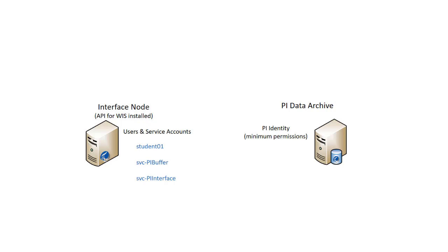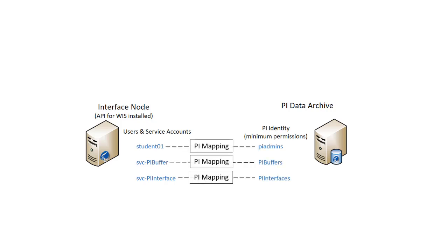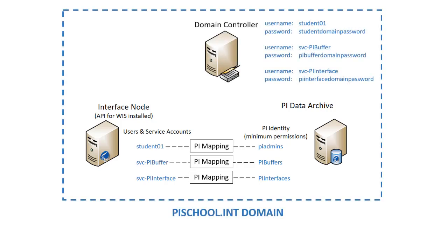You are likely familiar with using service accounts managed at the domain level to run PI applications, like PI Buffer Subsystem, and using Windows Integrated Security to authenticate those applications to the PI Data Archive using mapping. If you are using PI API 2016 for Windows Integrated Security, you may even be doing this for API connections such as PI Interfaces. This was all possible because the interface and PI Data Archive are in the same domain, and Active Directory manages the user and service accounts across the domain with their associated passwords.